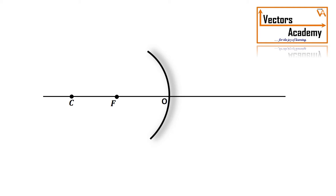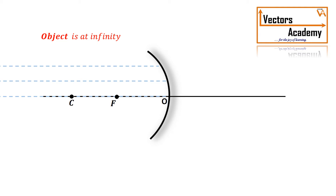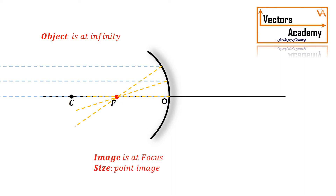When the object is placed at infinity, the rays coming from the object are parallel to each other and parallel to the principal axis. All rays parallel to the principal axis get reflected in such a way that they pass through the focus. So the image formed is at the focus and it is a point image.